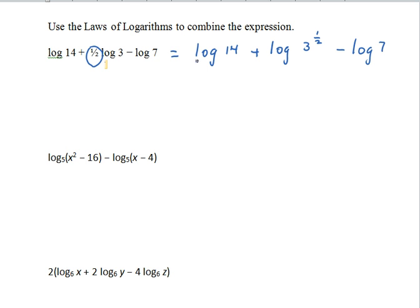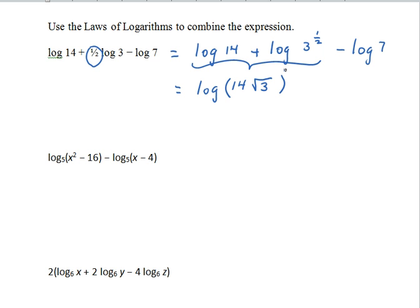Then I'm going to use the product rule on the first two terms. I'm also going to change 3 to the half to the square root of 3. So instead of two common logs, we have log of the product of the arguments, so 14 times the square root of 3, minus common log of 7.